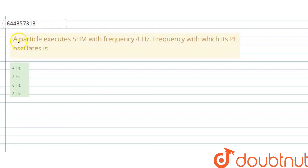Hello everyone, let me explain this question. A particle executes SHM with frequency 4 Hz. Frequency with which its potential energy oscillates. There are 4 options given.